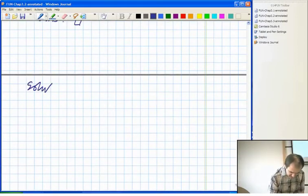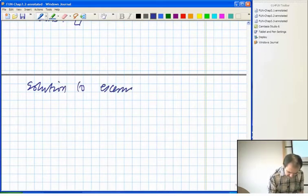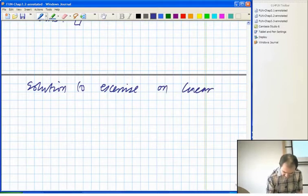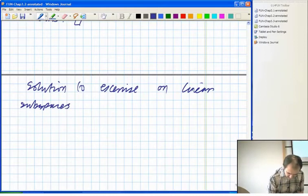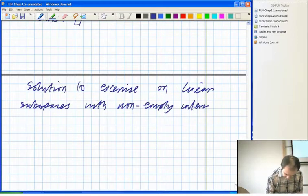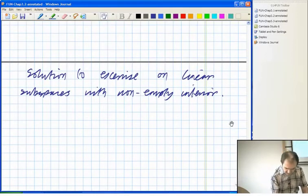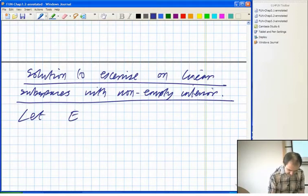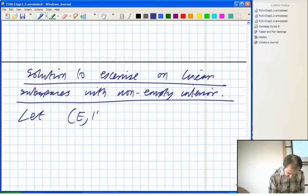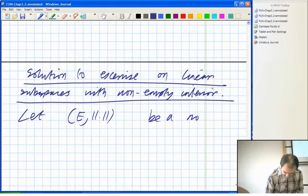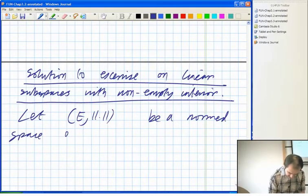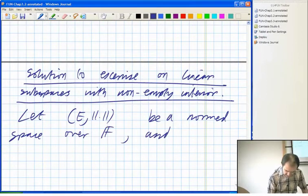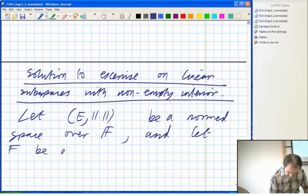So, this is the solution to the exercise on linear subspaces with non-empty interior. So, we've got a normed space E over F, which is R or C, and let F be a linear subspace.